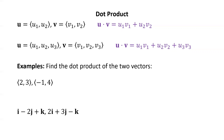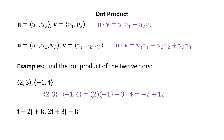Let's look at some examples. Now is a good time to pause the video, try these examples yourself, and then resume the video to check your answers. First, we have two vectors in two-space: (2, 3) and (-1, 4). Taking their dot product, we get 2×(-1) + 3×4, which is -2 + 12, or 10.